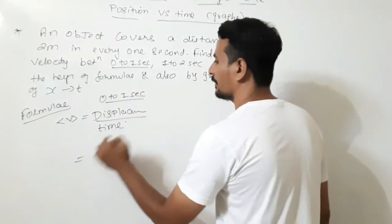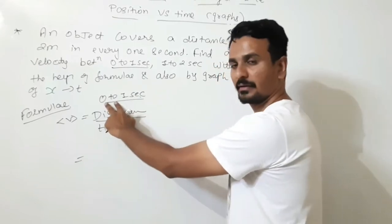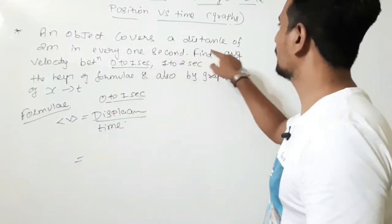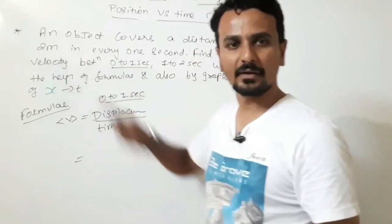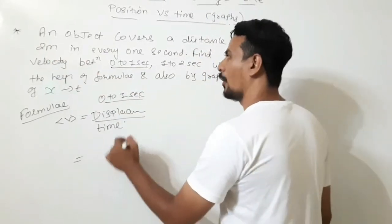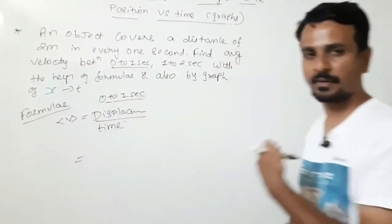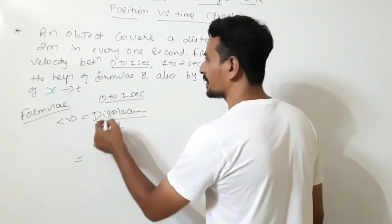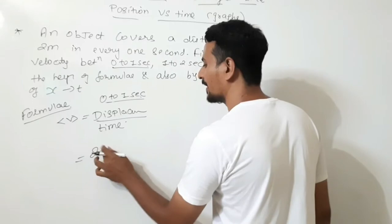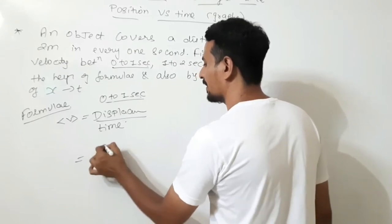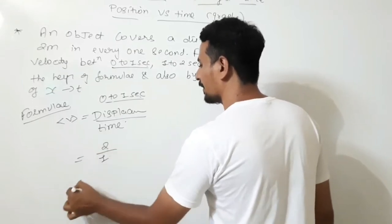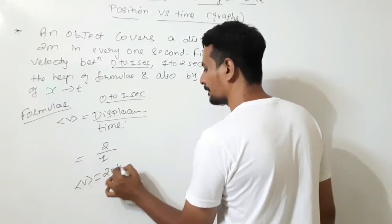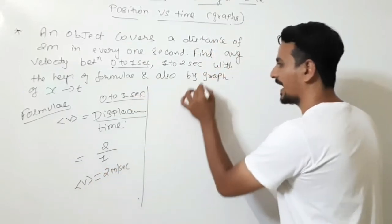Average velocity is displacement divided by time. First we calculate between 0 to 1 second. The time interval is 1 second. In that time interval, the object covers a distance of 2 meters. Since the object is moving in a straight line in one direction, displacement equals distance, which is 2 meters. Time interval is 1 second. So average velocity comes out to be 2 meters per second.